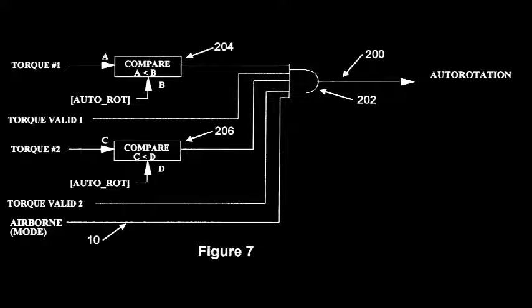The helicopter has to be in an airborne state. The torque of engine number one has to be less than autorotation torque. The torque of engine number two also has to be less than autorotation torque. And both torque serial bus sensors must be valid.